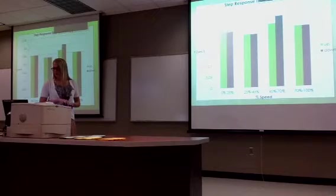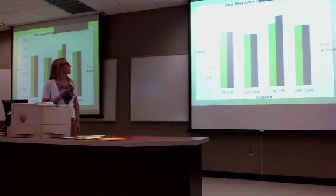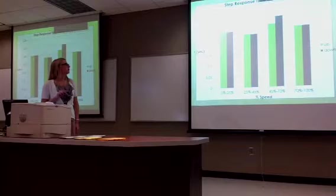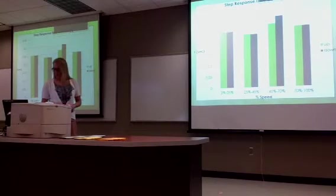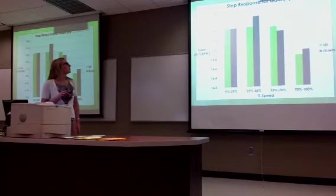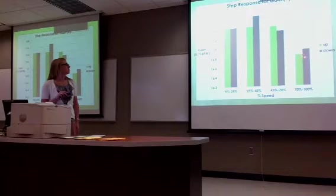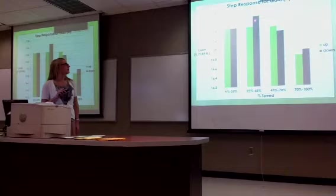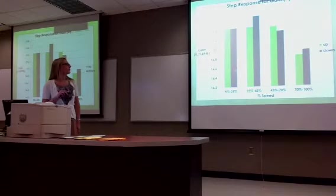Here is the time process constant doing the same thing. They vary from about 0.23 to 0.3, with up and down values shown again. Here's the gain values — it looks like they change a lot, but it's not really that much. It's about 16.8 up to about 17.7. The green is up and the gray is down.